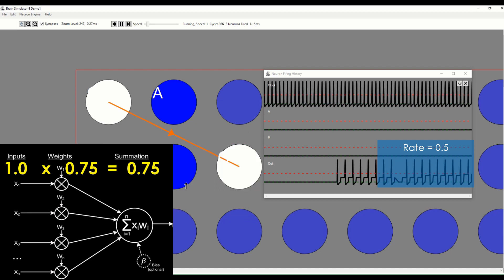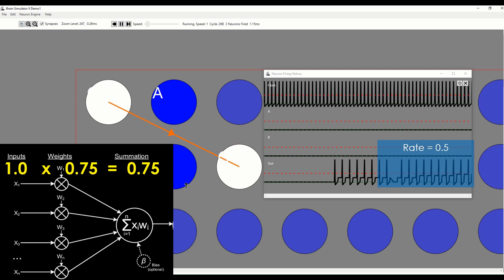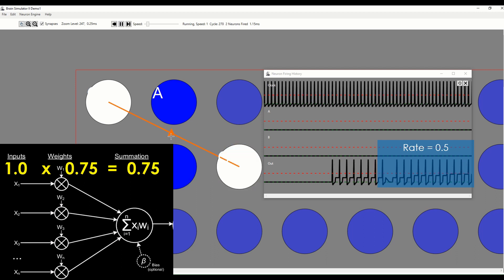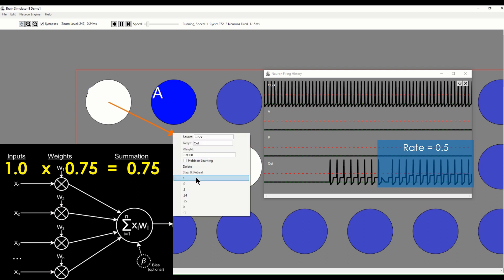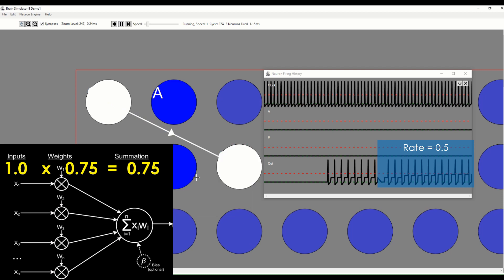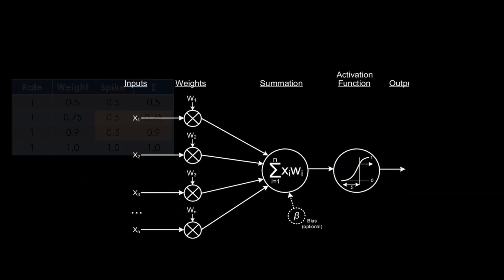We can see that the biological spiking neuron simply doesn't match the neural network formula. This is because these pesky biological neurons are simply not linear devices.